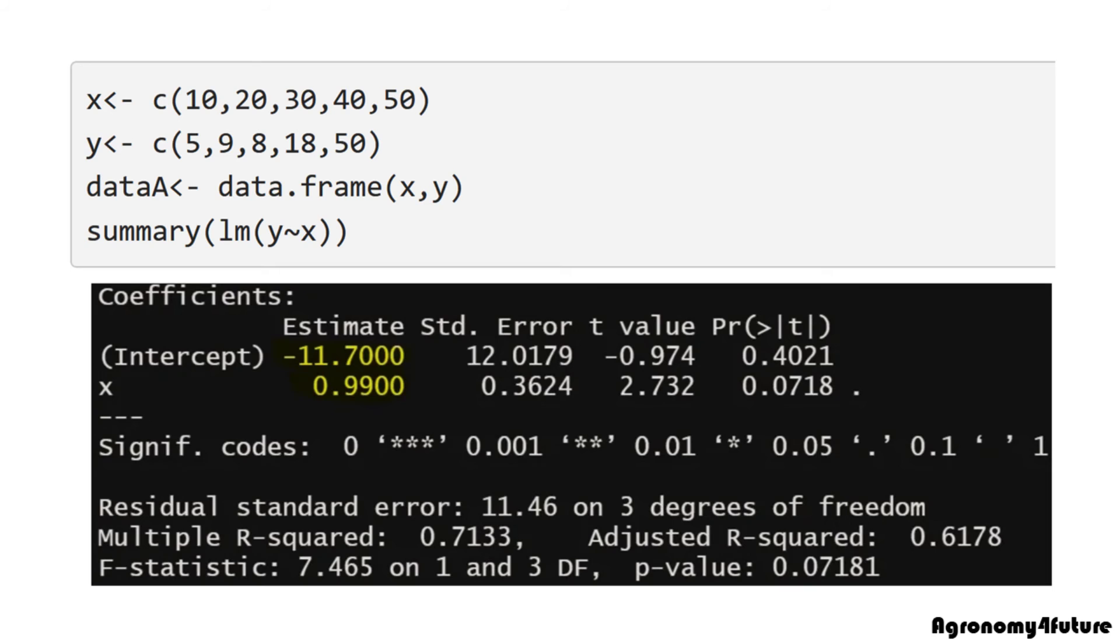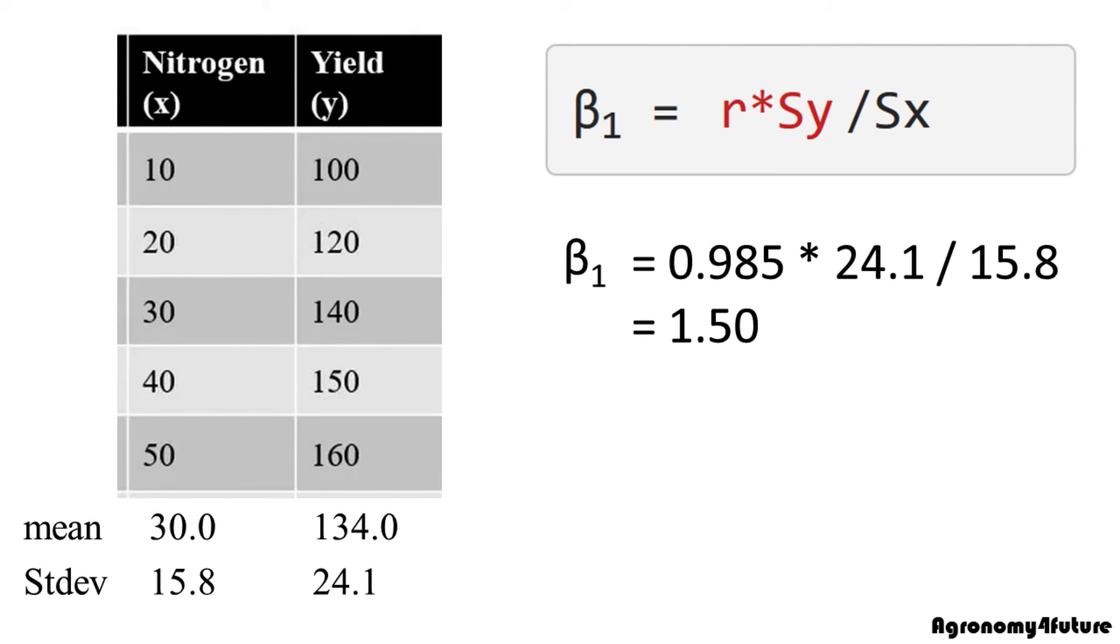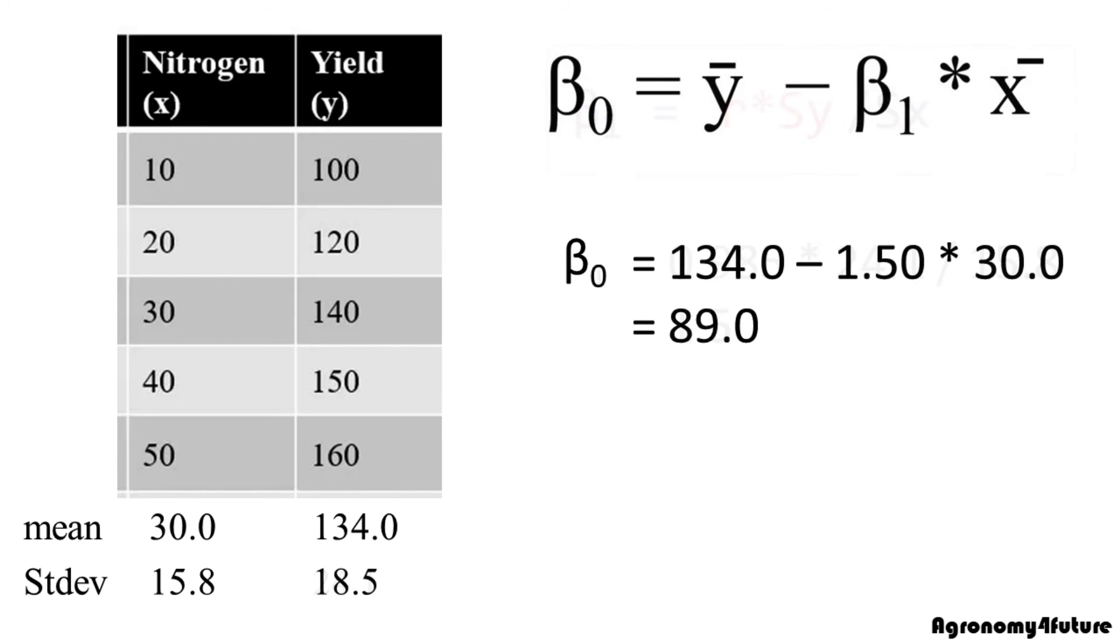Now, we fully understand correlation and slope and intercept in simple linear regression. Let's go back to our data. Now, we can simply calculate intercept and slope about this simple regression model. Beta 1 will be 1.50 and beta 0 will be 89.0.